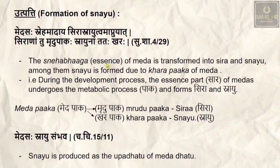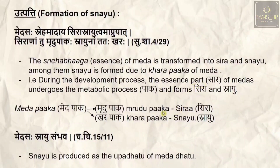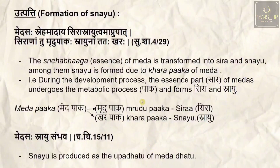The sneha bhaga — the essence part of meda — is transformed into sira and snayu through mrudhu paka and khara paka respectively. During the developmental process, the sara of medas undergoes metabolic paka to form sira and snayu. Snayu is formed by khara paka of meda, and is also understood as the upadhatu of meda — medasara snayu sambhava.